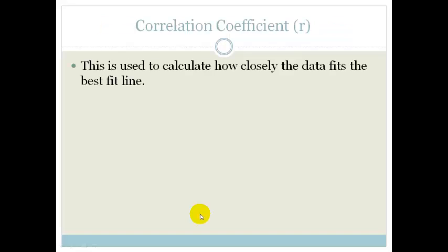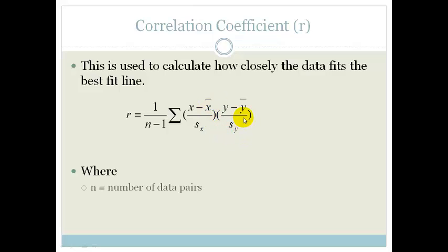The correlation coefficient which is used to work out how closely the data fits the best line. So this is the formula for the correlation coefficient and again I do not want you to panic because I'm going to show you how to do this in the calculator. I just want you to know the theory, where r is equal to 1 over n minus 1 times by the sum of x minus x average over s of x times by y minus y average over s of y.